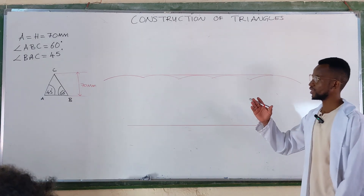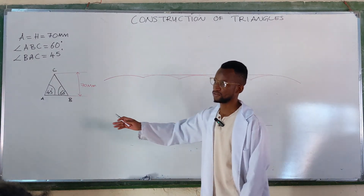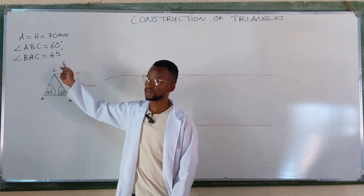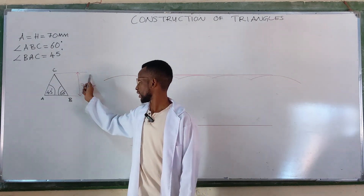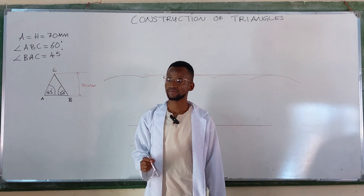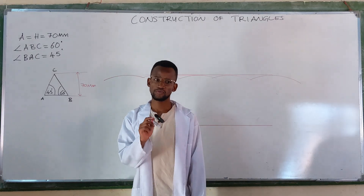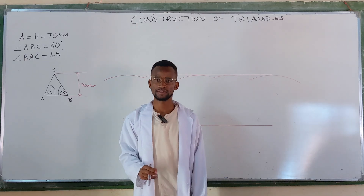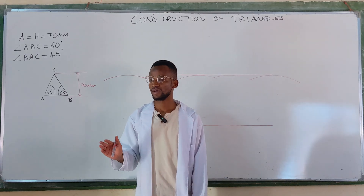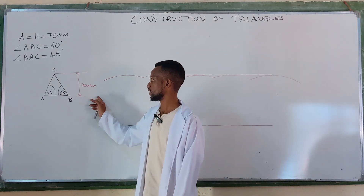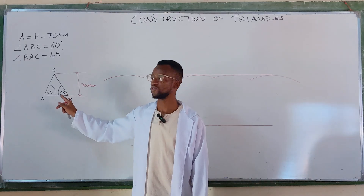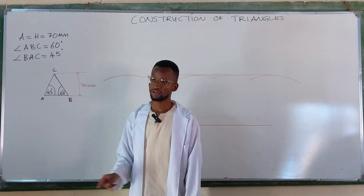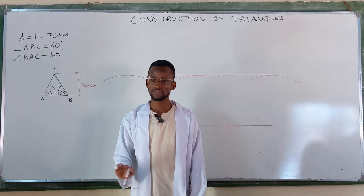When you consider the triangle data that has been given — even the sketch — you find that we've not been given the length of any side. The only thing we've been given is the height as well as the two base angles. No length of sides.